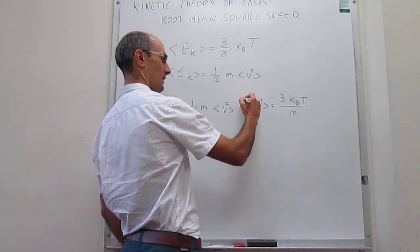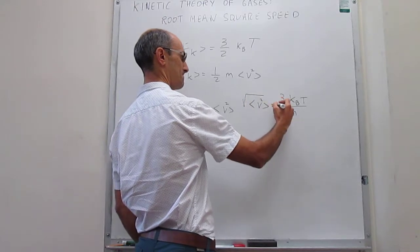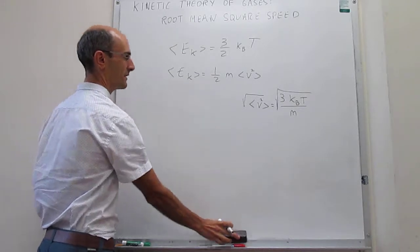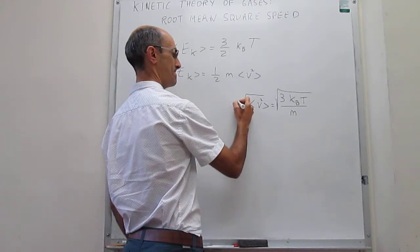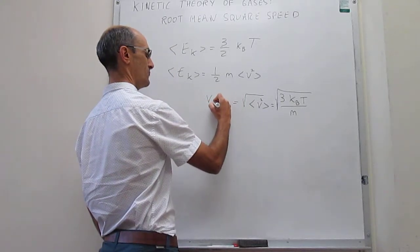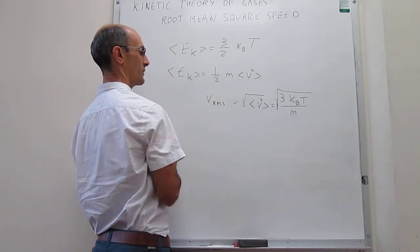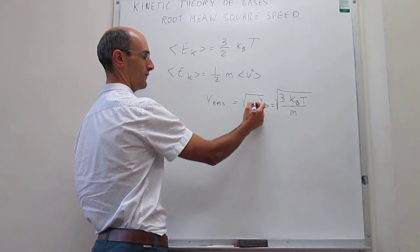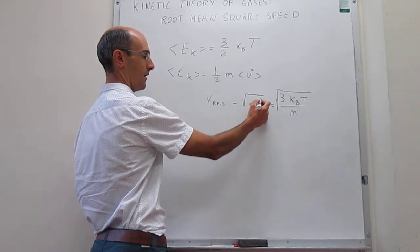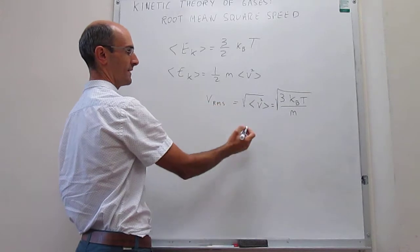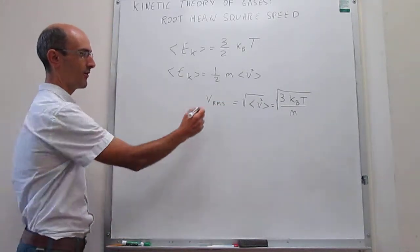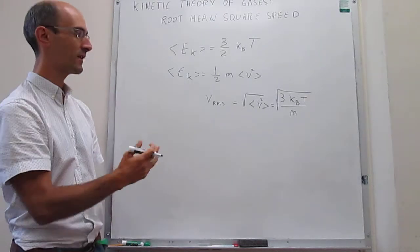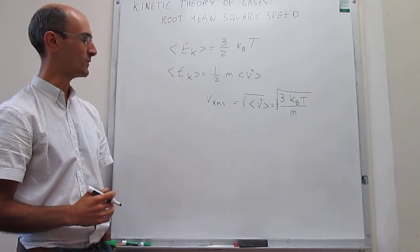We can take the square root of this and this is exactly what we call the root mean square speed, because it's the square root of the average, the mean, of the velocity squared. That's what this V_RMS, root mean square, means. So let's see if we can do a couple of calculations to illustrate what these velocities are.